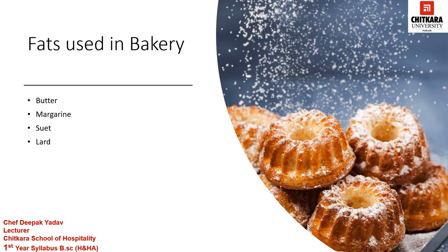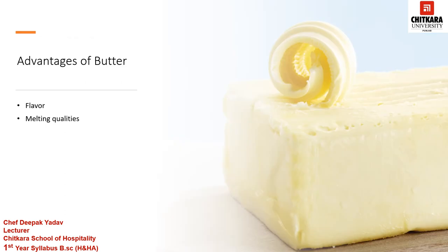Now it's time to discuss fats which we use specially in bakery. The four kinds of fats which we use in bakery are butter, margarine, suet and lard. Dairy butter consists of about 80% fat and 20% water and whey. It is the milk protein in the whey that makes butter spoil quickly, and together with milk sugar — that is lactose — causes it to scorch when overheated. In the west, most butter is made from cow's milk, but elsewhere butter is made from the milk of water buffalo, yak, goat and sheep.